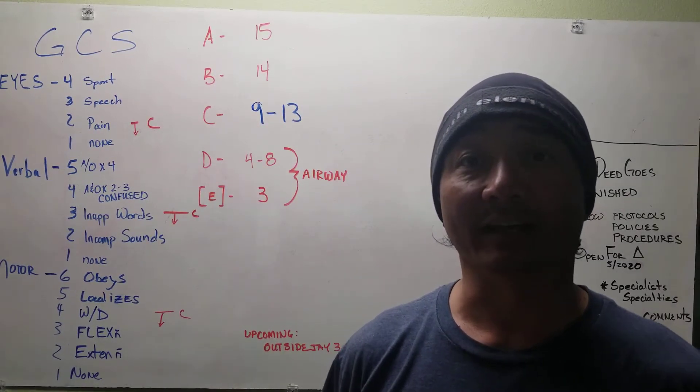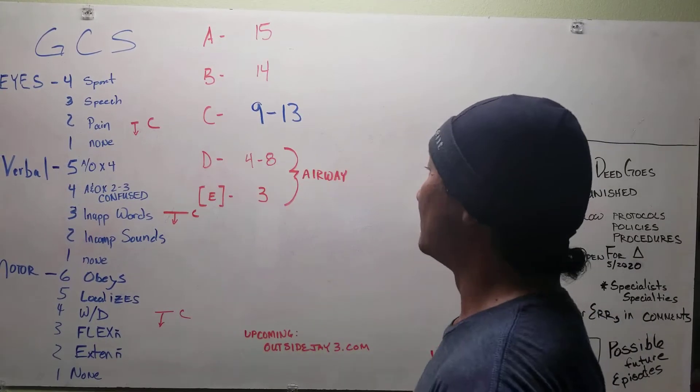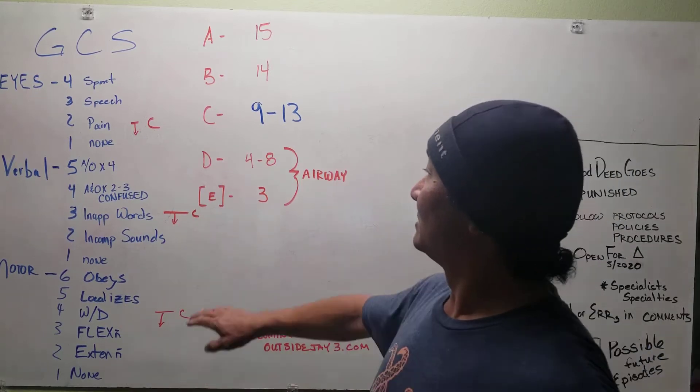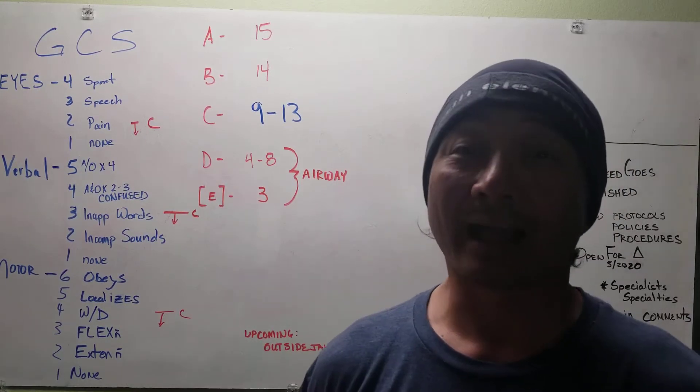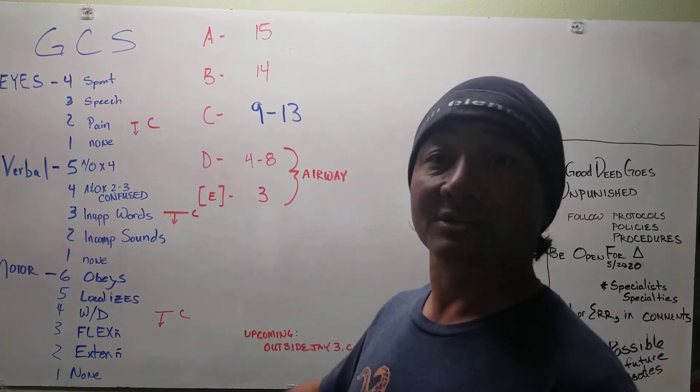If you have a GCS of fifteen, right, if you're awake and alert and oriented times four and you have a GCS of fifteen, that's great, that's good, but my antennas are down. I'm not really that worried about it.